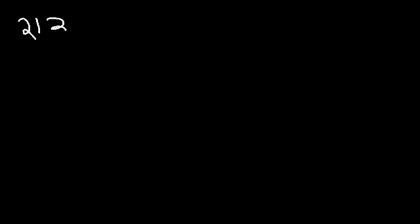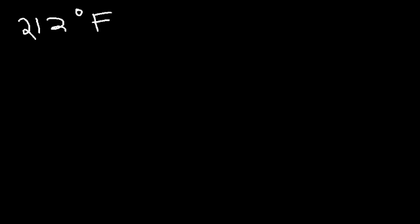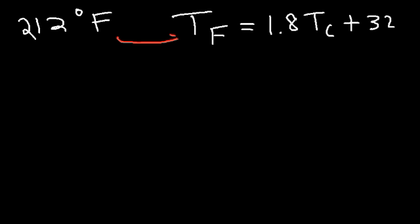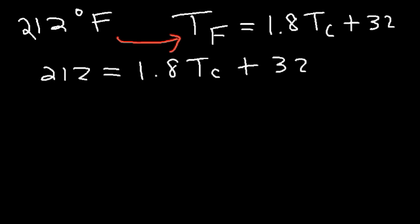So let's say if we have a temperature of 212 Fahrenheit — how can we calculate the Celsius temperature and the Kelvin temperature? First let's calculate the Celsius temperature. The equation between Fahrenheit and Celsius is: Fahrenheit equals 1.8 times the Celsius temperature plus 32, or F = 1.8C + 32. Since we're looking for Celsius, plug in 212 for F: 212 = 1.8C + 32.